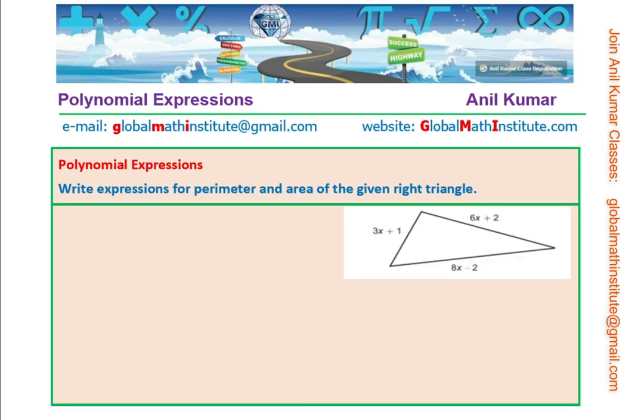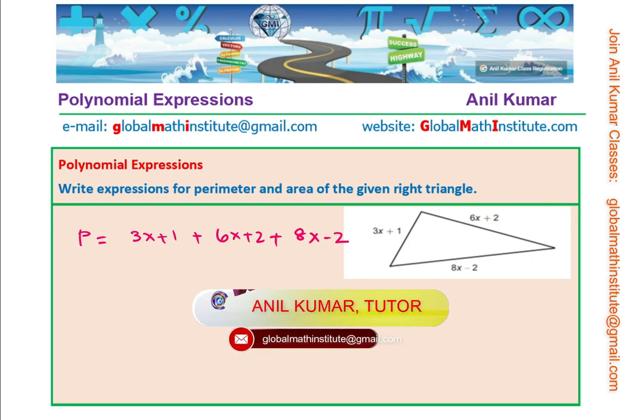Now, here is a practice test question for you. So, here is the right triangle. And you have to find area and perimeter of this triangle. Clearly, the area is equals to how? Identify base and height. Multiply them and get your answer. The shorter sides are base and height. So, you have 3x plus 1 times 6x plus 2. Perfect. So, expand, simplify, write down your answer. Similarly, you can find the perimeter as sum of these three sides, which is 3x plus 1 plus 6x plus 2 plus the third side, 8x minus 2. Feel free to write these answers as comments.